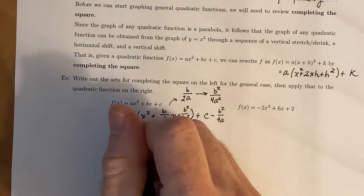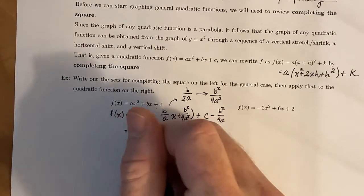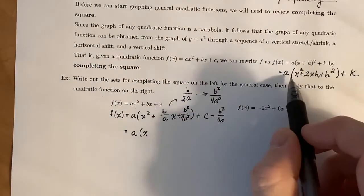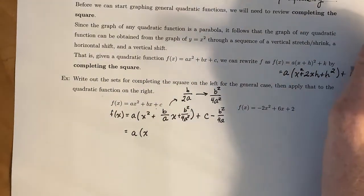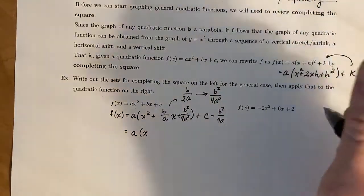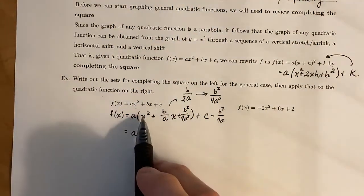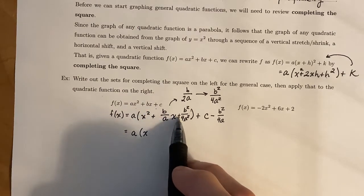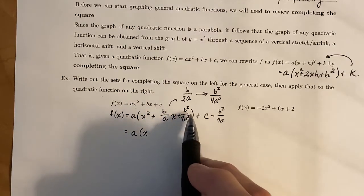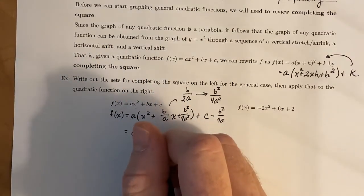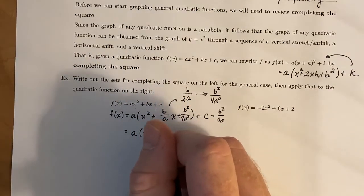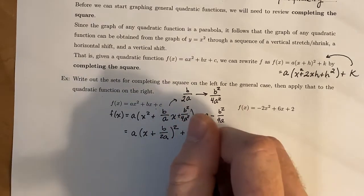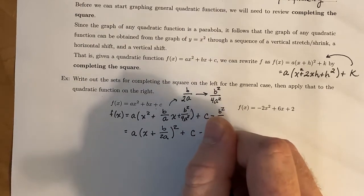All right, we are in prime position to rewrite our function. So again, we have a. And what we're going to do is reverse this step to bring us back up to here. So x² + (b/a)x + b²/4a² factors as (x + b/2a)² + c - b²/4a.